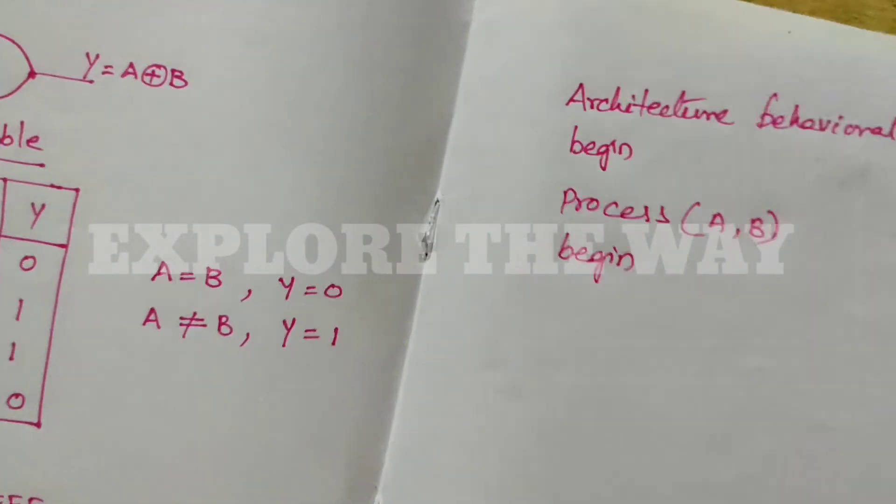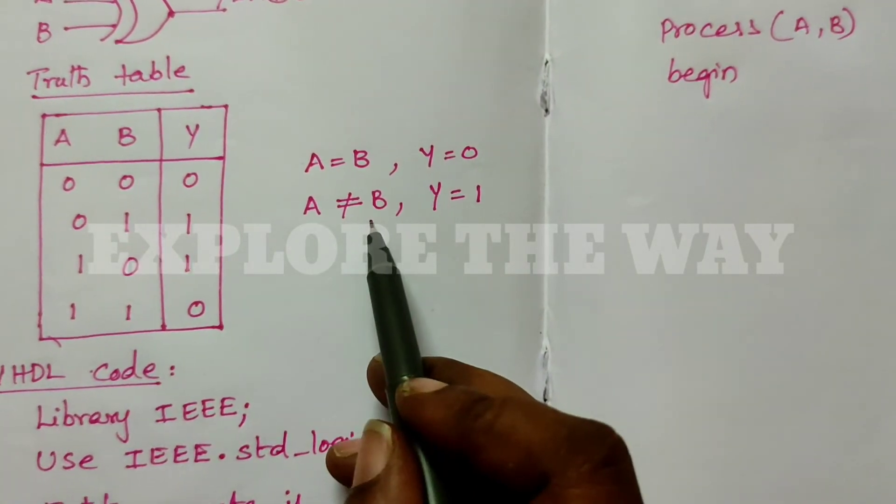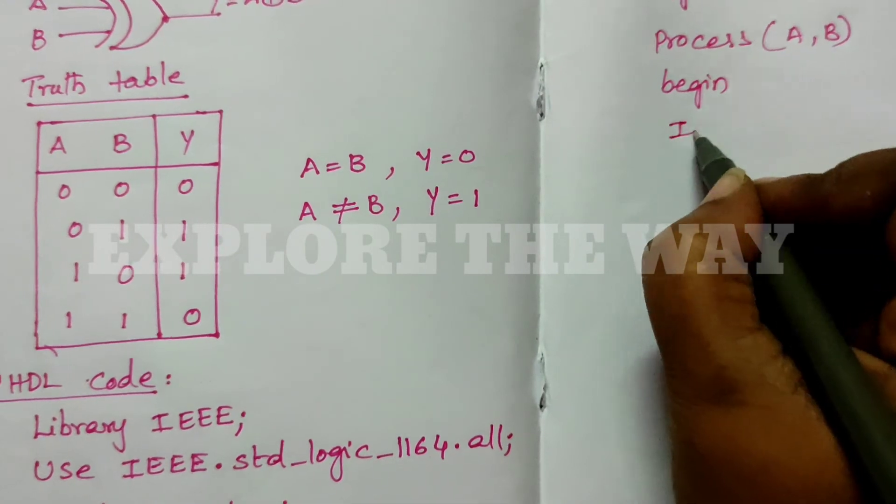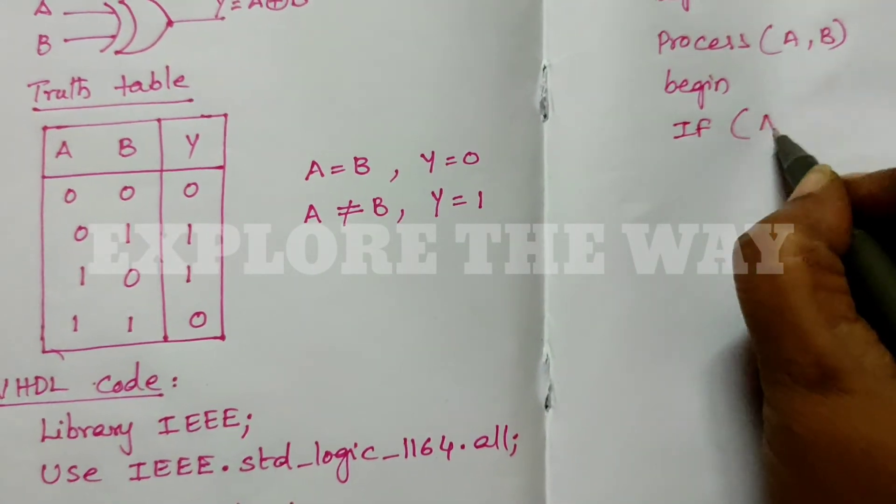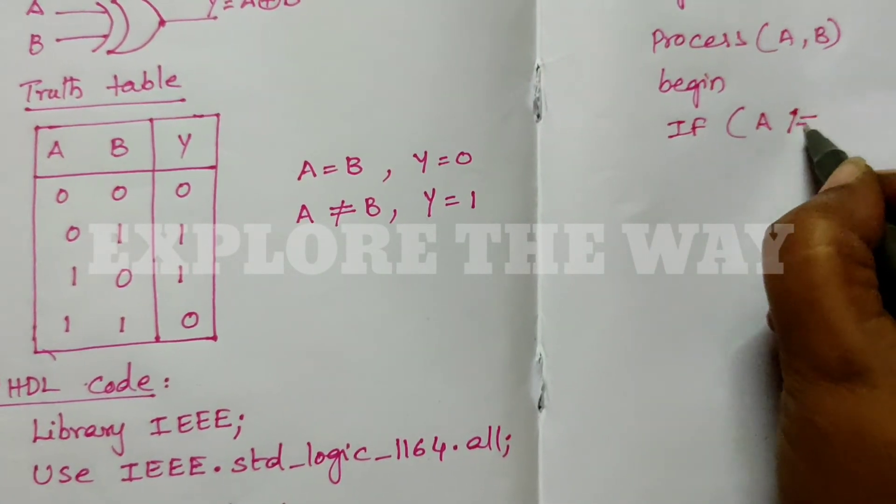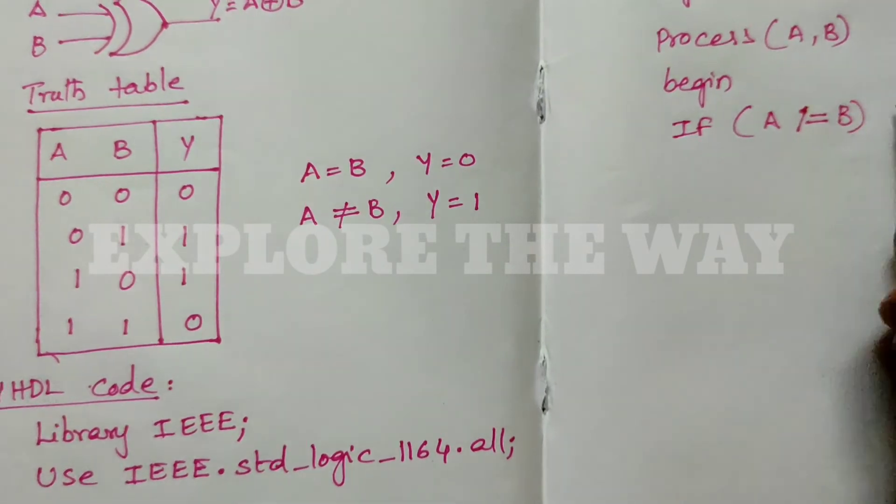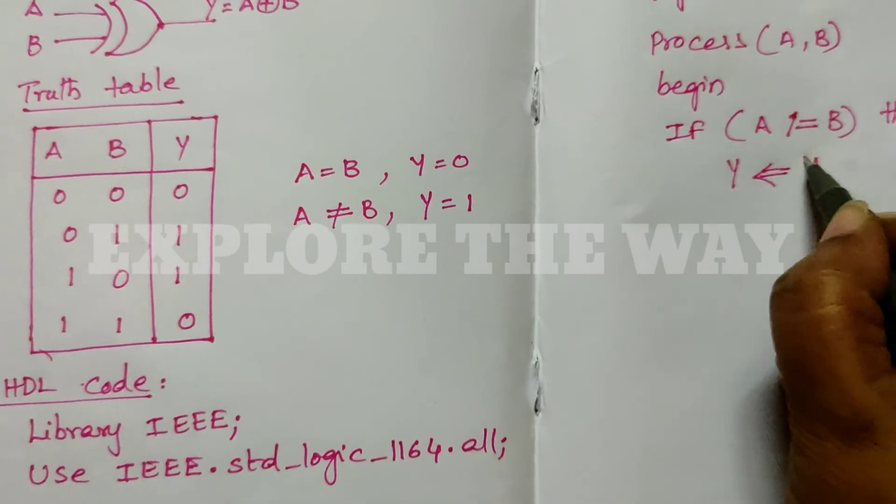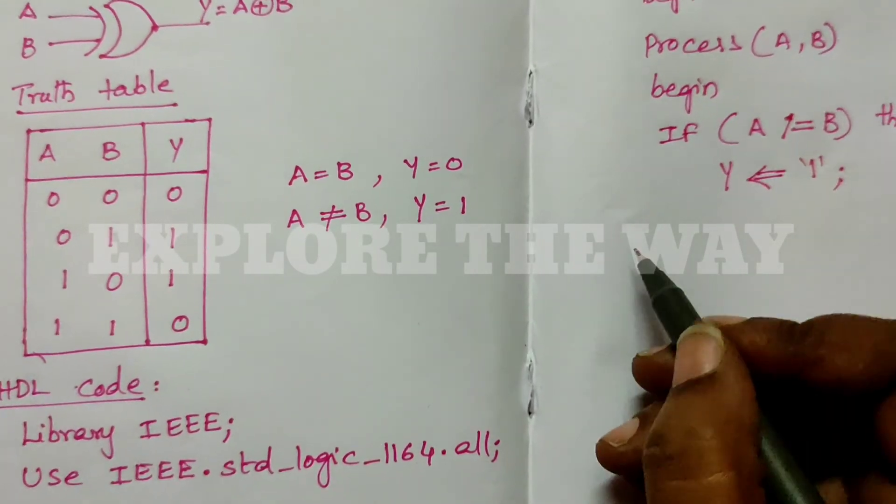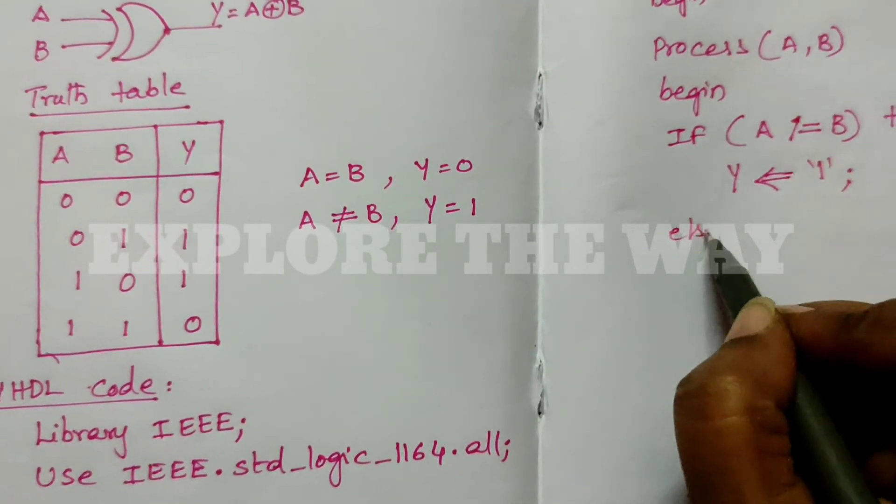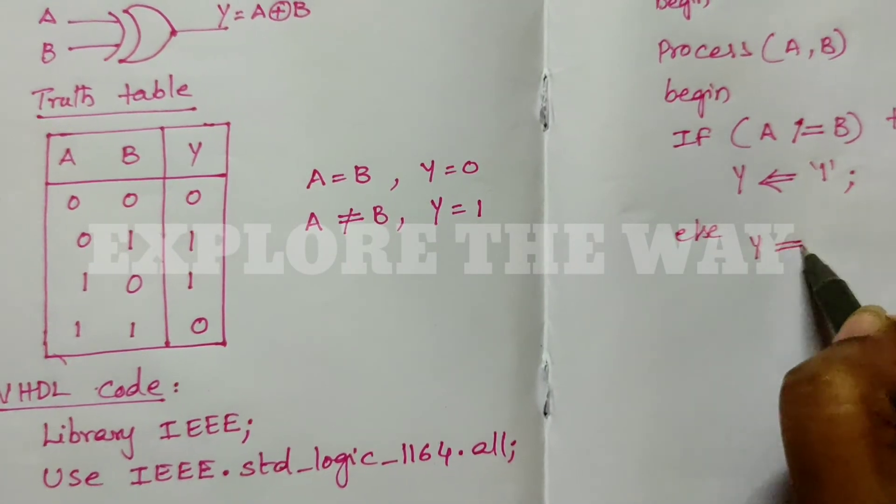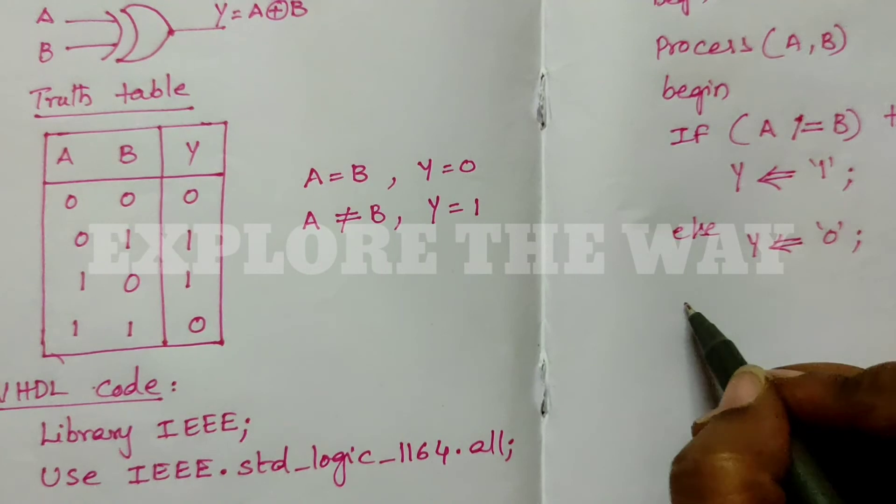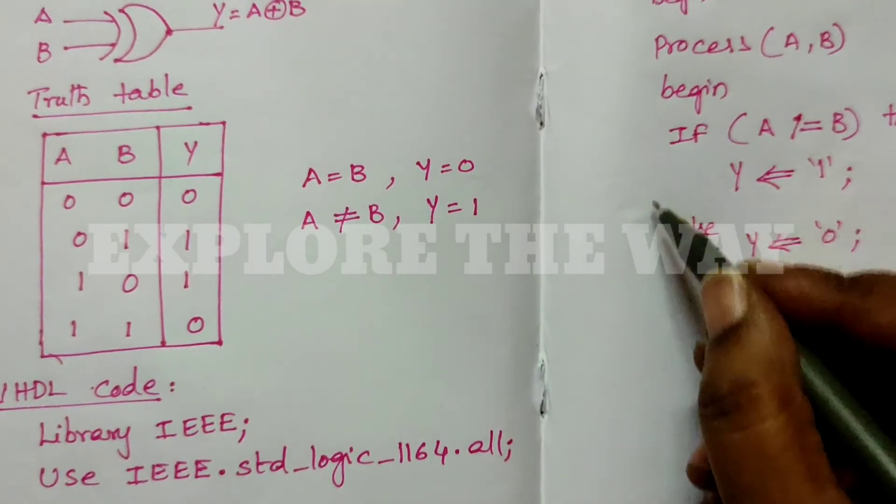We will write this behavior: if A is not equal to B, then the output is 1. So we write: if A not equal to B then Y assigned 1, else Y assigned 0, end if.